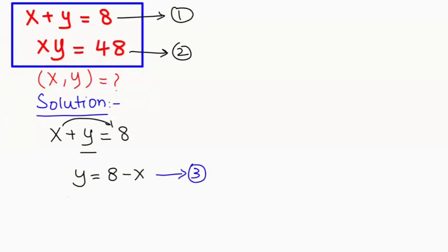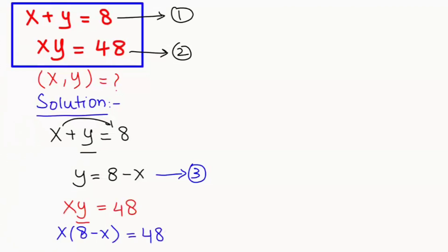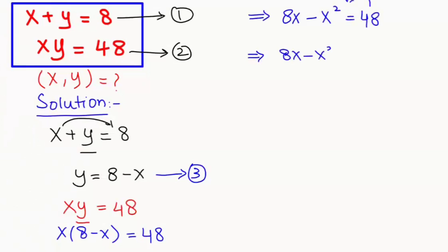Next I am going to take equation 2. Now we are going to plug in the y value, that is 8 minus x. So x times (8 minus x) equals 48, and this will be equals to 8x minus x squared equals 48. Now in the next step I am going to take this 48 to the left hand side: 8x minus x squared minus 48 equals 0.